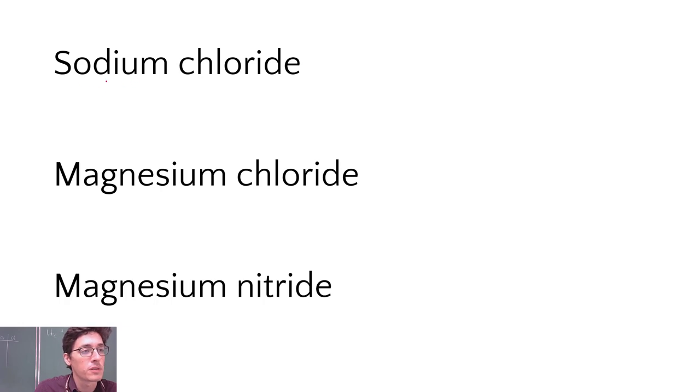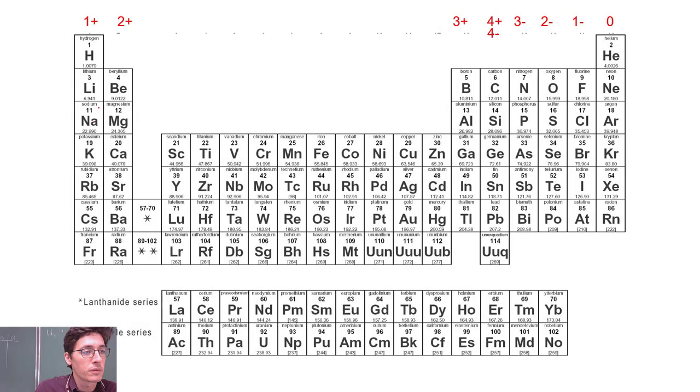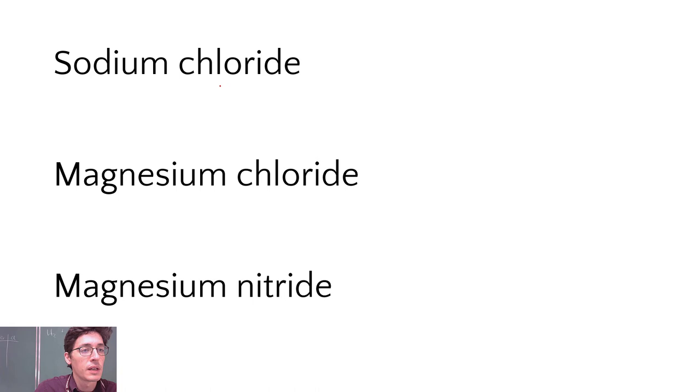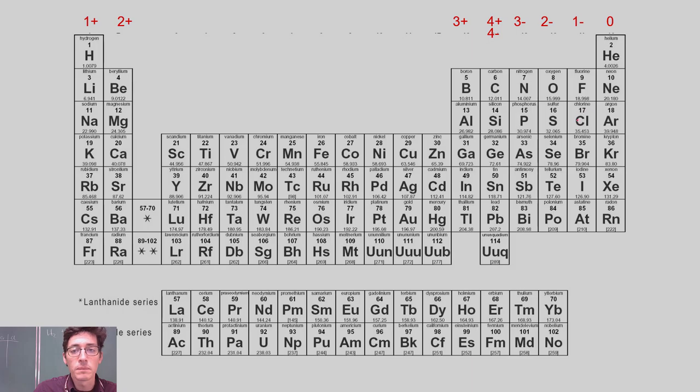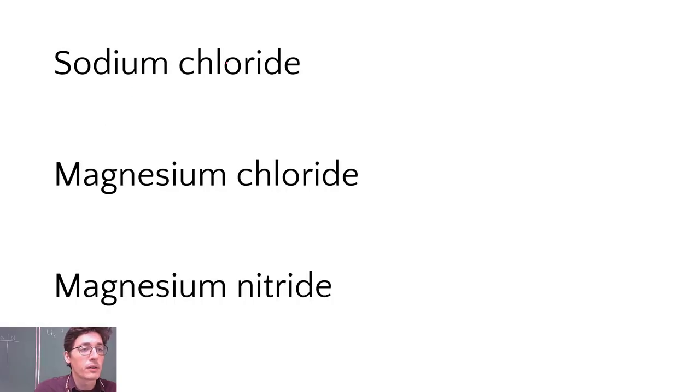I know they're ionic because sodium is a metal right here on the periodic table, number 11, and chloride stands for chlorine. Chlorine is a nonmetal way over here on my periodic table. So sodium chloride is a metal and a nonmetal. It's ionic and that means our charges have to cancel each other out.